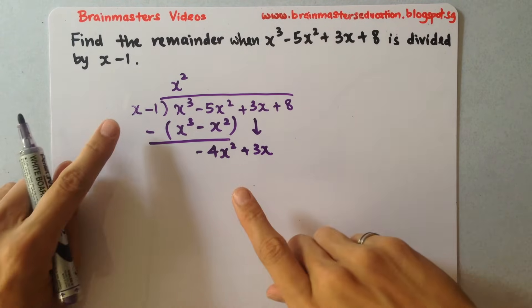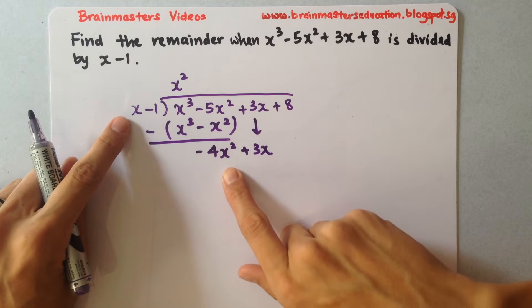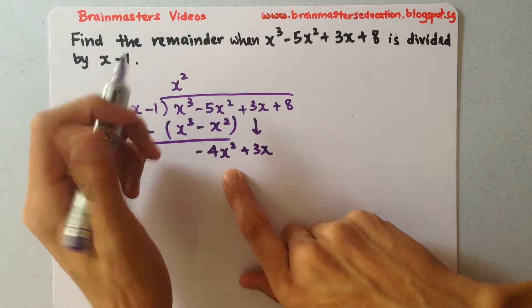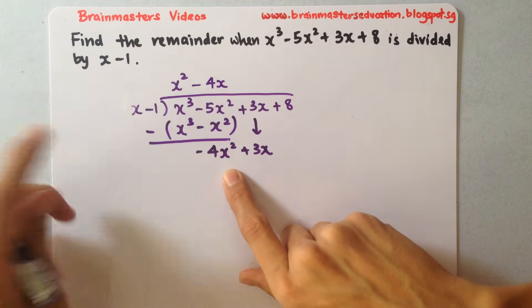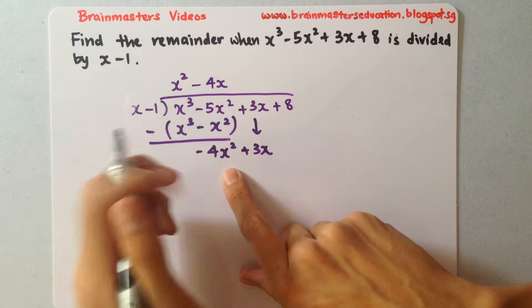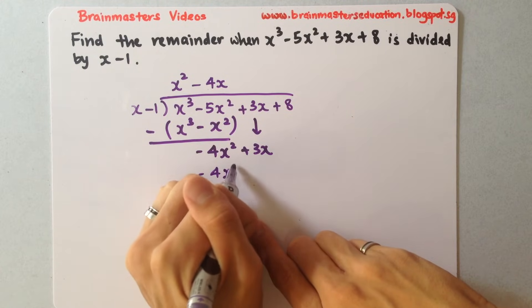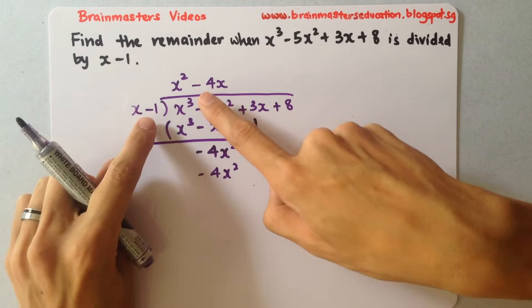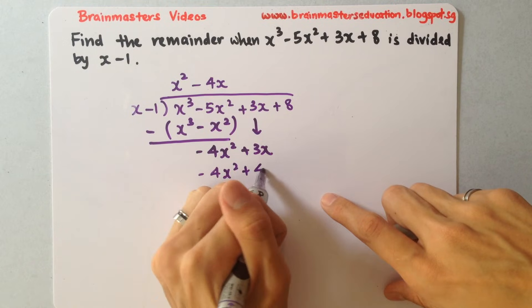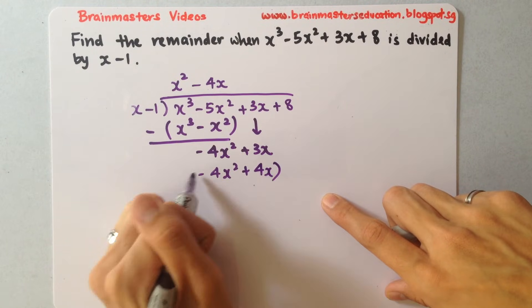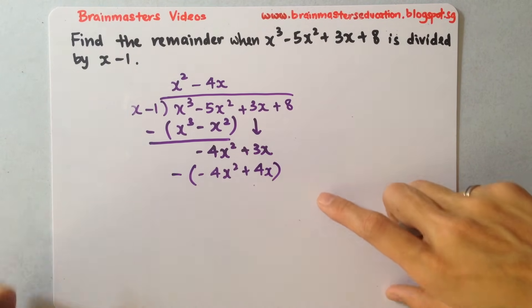Same thing again — comparing the first two terms, what can you multiply? That is minus 4x. So once you multiply, you have minus 4x squared and positive 4x. Same thing again, you put a bracket, put a negative.